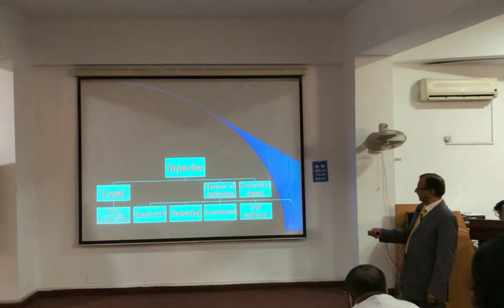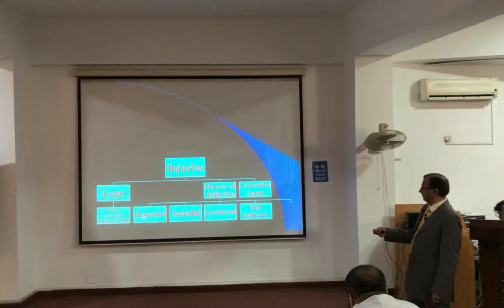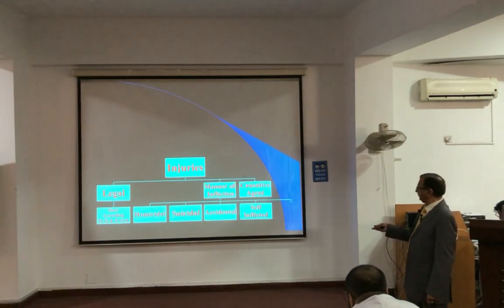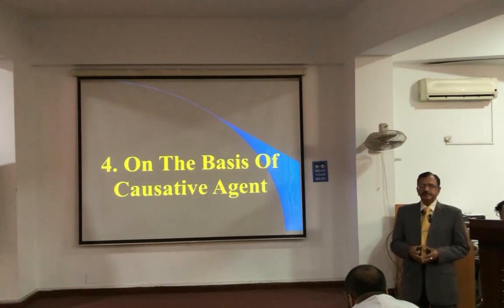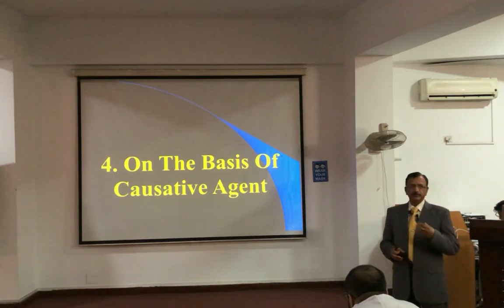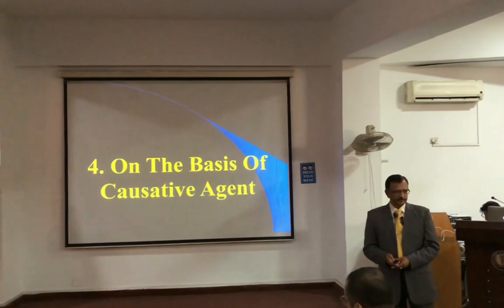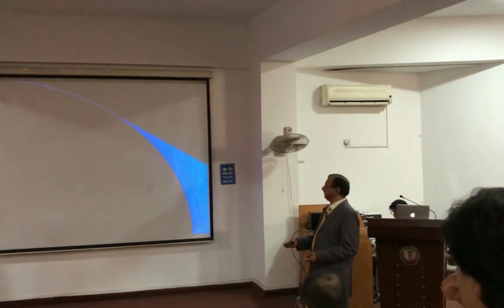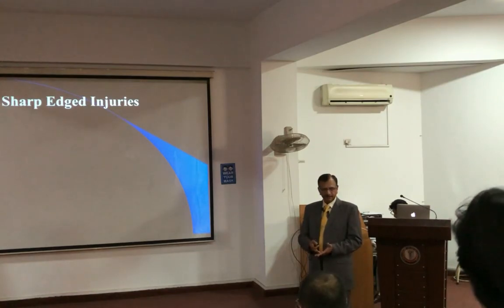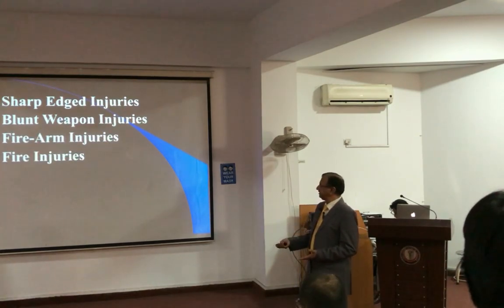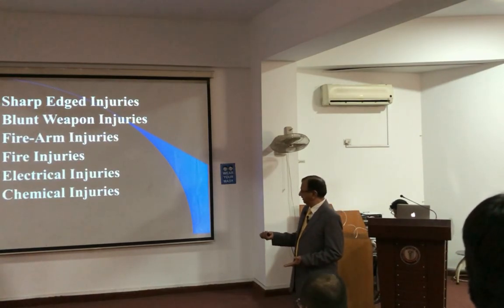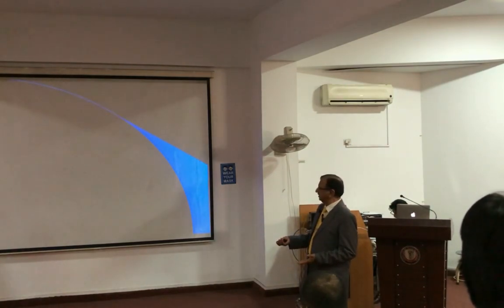Medico-legally, injuries are classified under the Qisas and Diyat Ordinance by manner of infliction — homicidal, suicidal, accidental — and depending upon the causative agent. The causative agent is the weapon or object responsible for causing the trauma or injury. That can be a sharp edge, a blunt weapon, firearm, fire, electrical, chemical, or radiation — they are all causative agents.